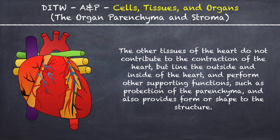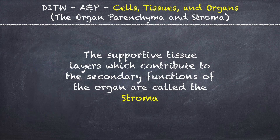The other tissues of the heart do not contribute to the contraction of the heart but line the outside and inside of the heart and perform other supporting functions such as protection of the parenchyma and also provide form or shape to the structure. The supportive tissue layers which contribute to the secondary functions of the organ are called the stroma.